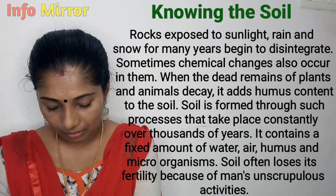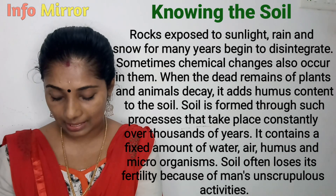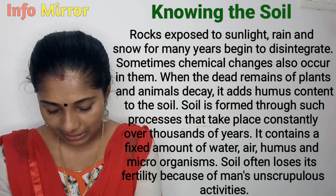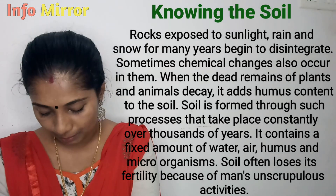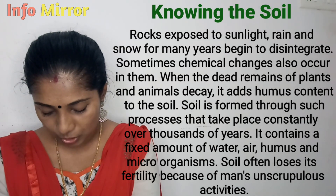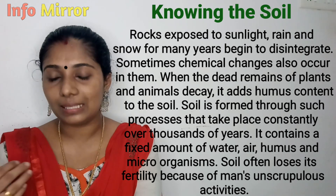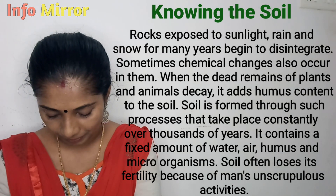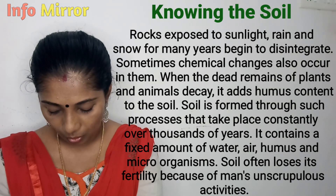Rocks exposed to sunlight, rain and snow for many years begin to disintegrate. Sometimes chemical changes also occur. When the dead remains of plants and animals decay, it adds humus content to the soil. Soil is formed through such a process that takes place constantly over thousands of years.